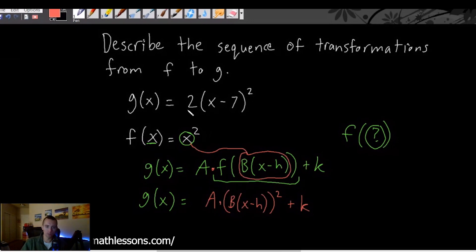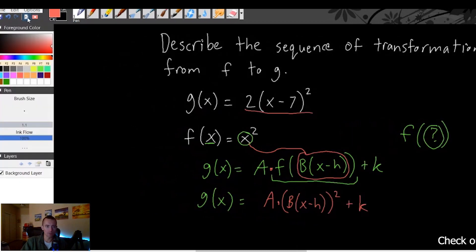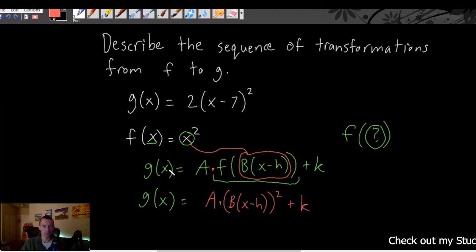What we had here, A times f(B(x - h)) all plus k, that is a more generic template that can be applied to any type of function, whereas this specific template here is what it looks like when you're applying this general transformation template specifically when your parent function is x². So now we can just compare the components of this template to the components of the g(x) we were given here and figure out what those transformations are.